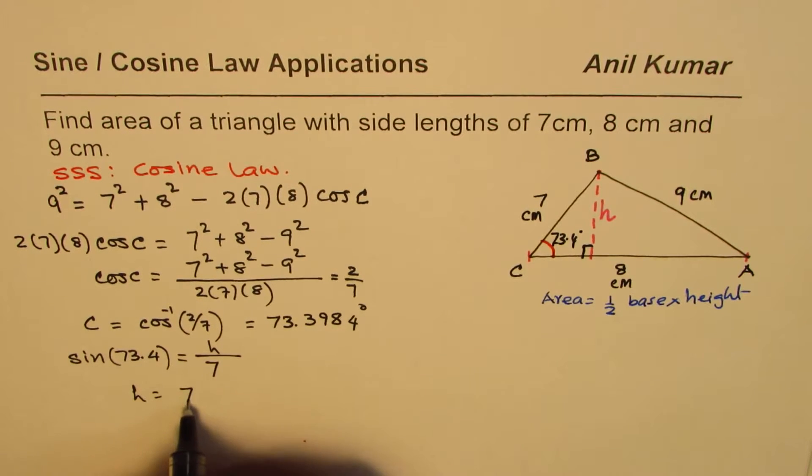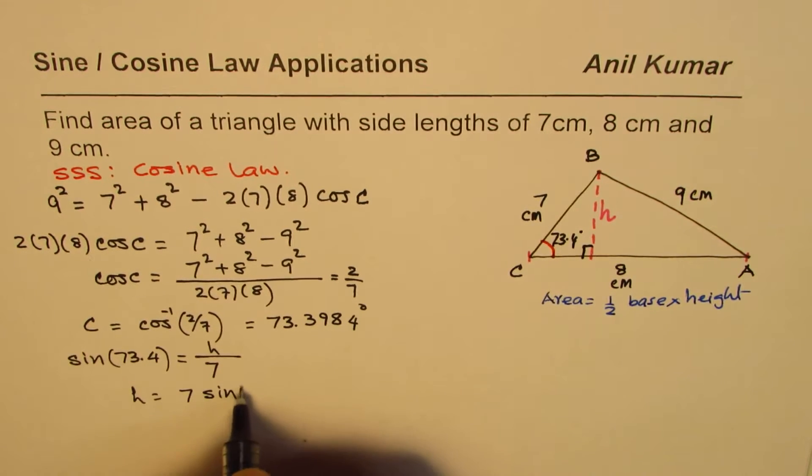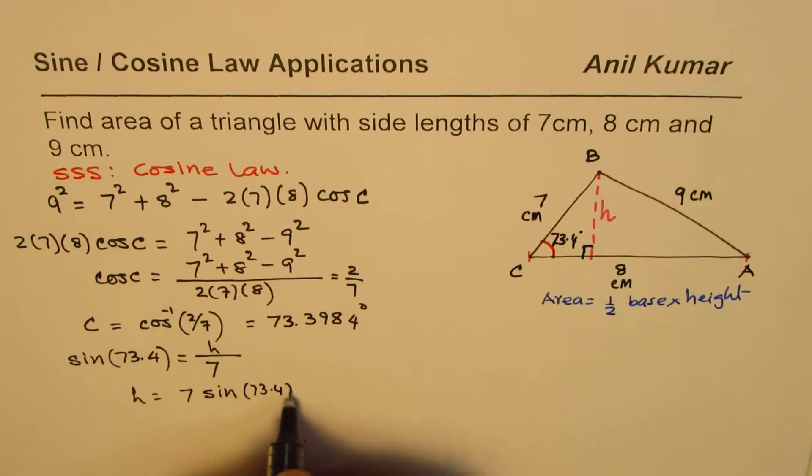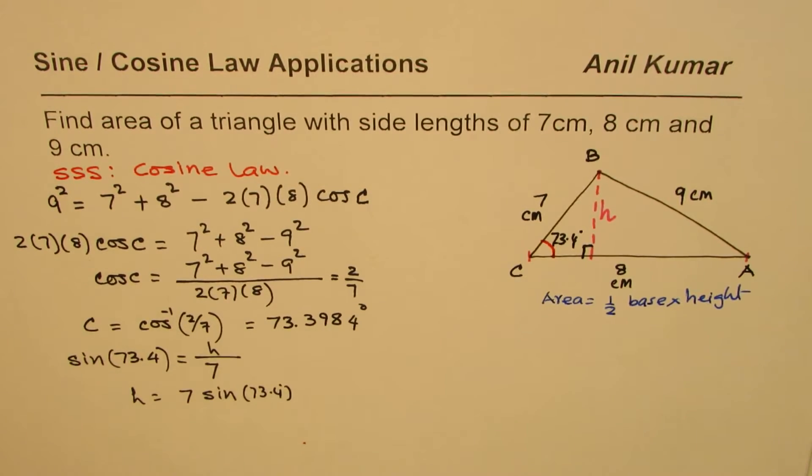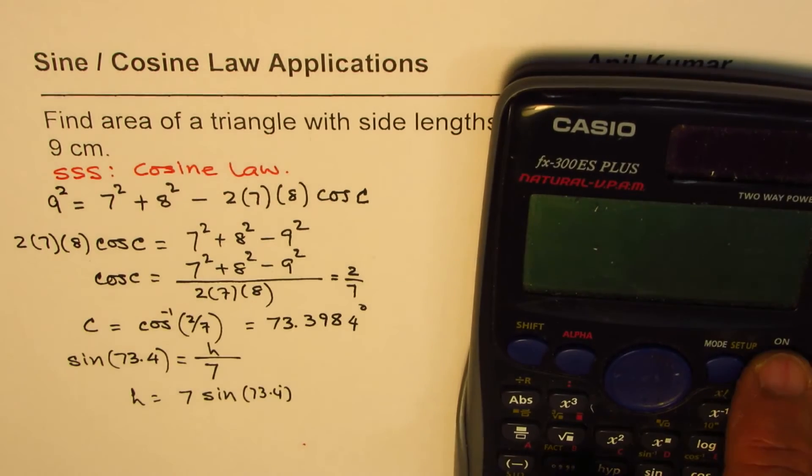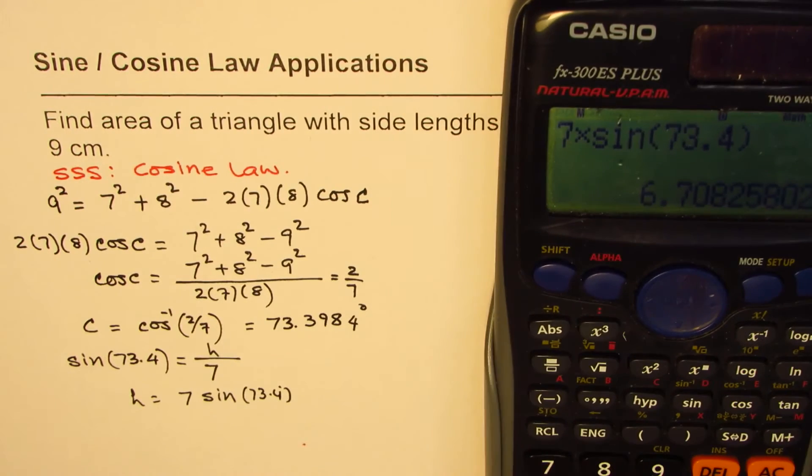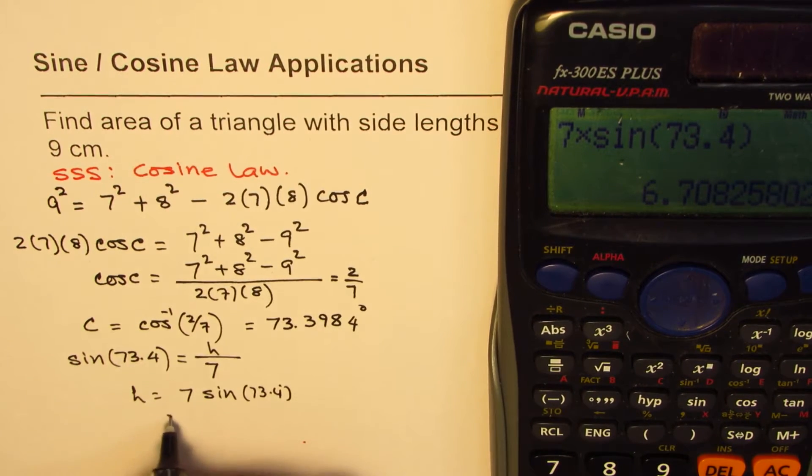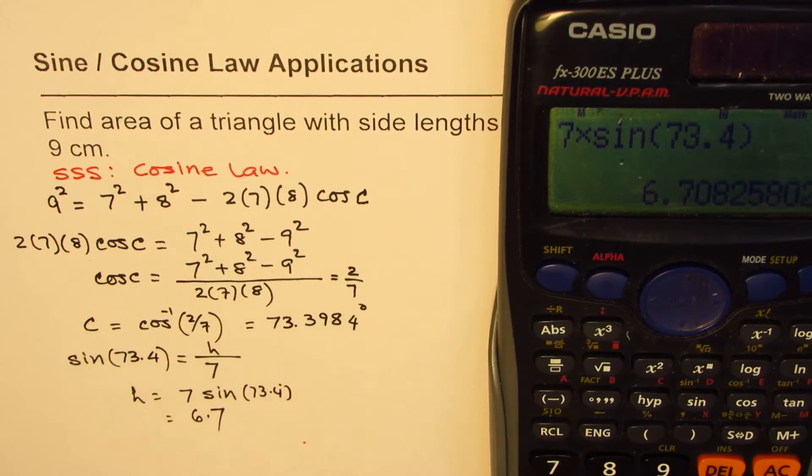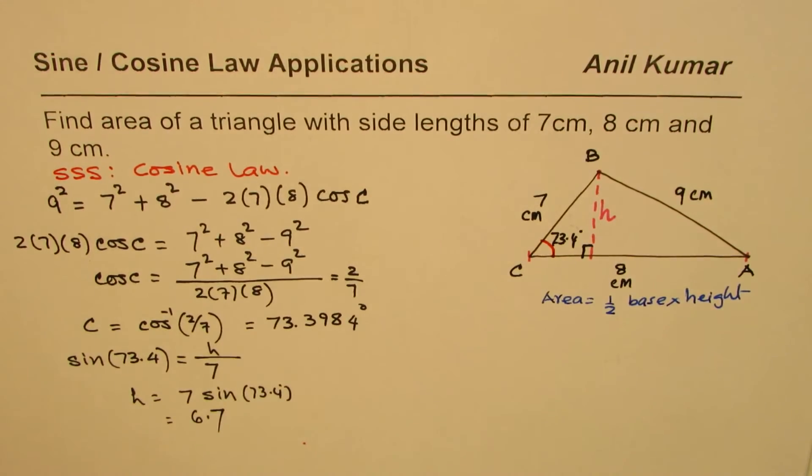So from here height equals 7 times sine of the angle 73.4 degrees. So let's calculate. So we are doing approximation now. We did 7 times sin(73.4°) equals 6.7. So we say height equals 6.7.